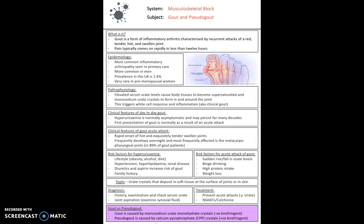The key clinical difference between gout and pseudogout is that gout is caused by monosodium urate monohydrate crystals and produces a negative birefringent test. Pseudogout is caused by calcium pyrophosphate crystals and produces a positive birefringent test.